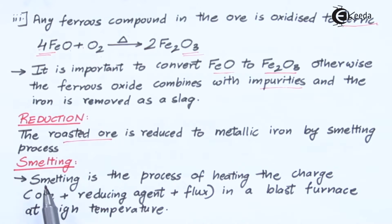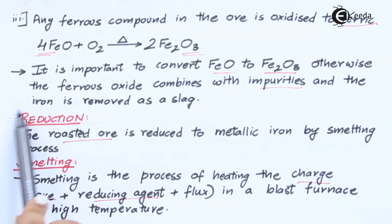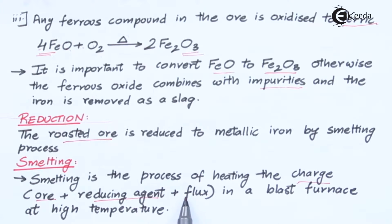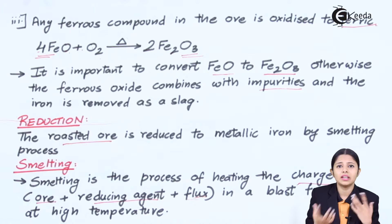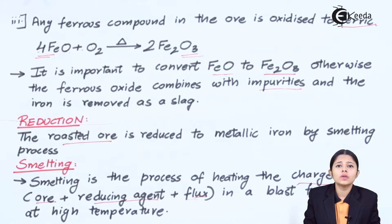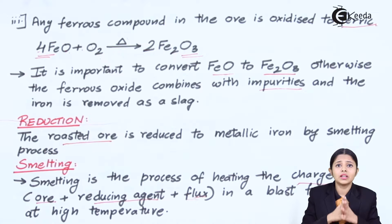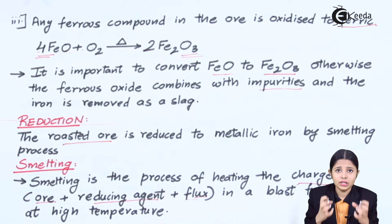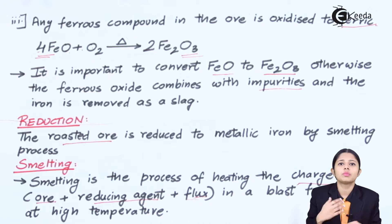The first method used is smelting. Smelting is the process of heating the charge. The charge is the main ore plus a reducing agent. Smelting comes under the main process of reduction. So: ore plus reducing agent plus flux in a blast furnace at high temperature. Flux is nothing but a heating agent — a kind of fuel with a high calorific value. Inside a blast furnace, fire is not present on all four sides, so flux is added to emit a lot of heat and maintain the temperature for further operations.